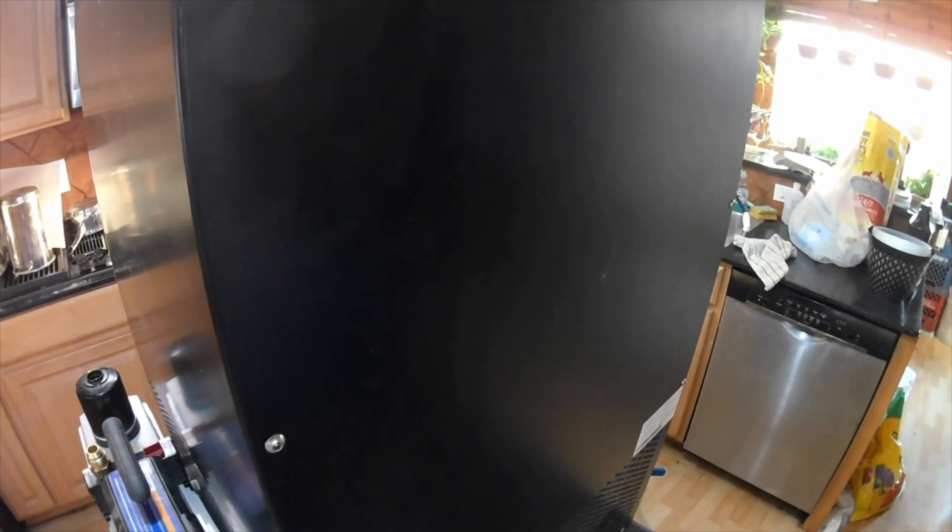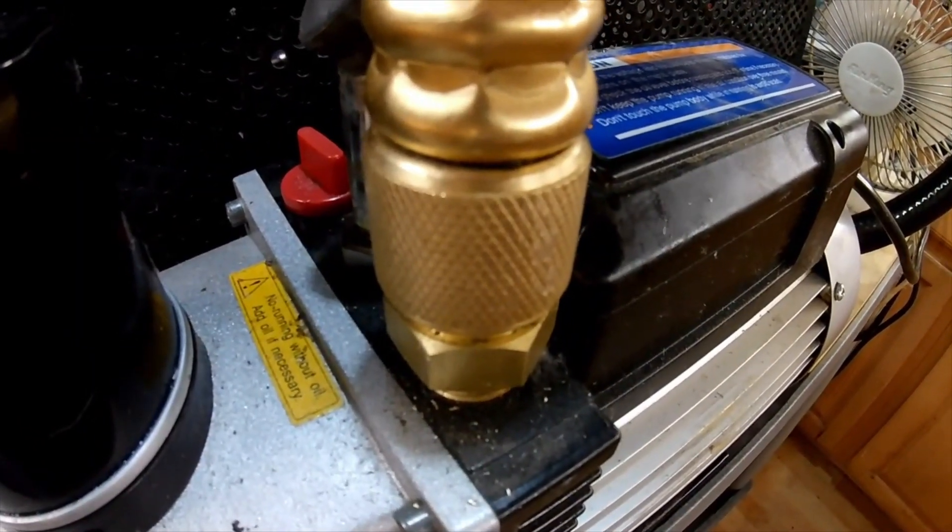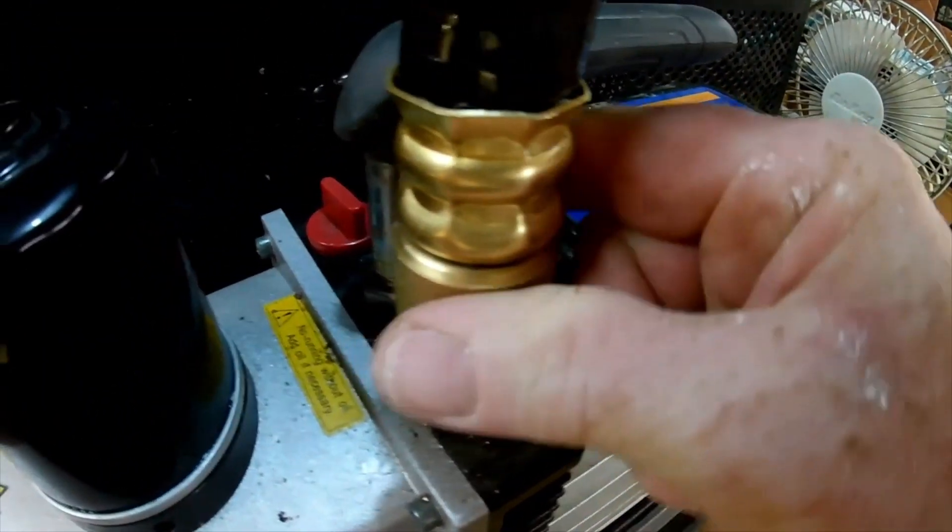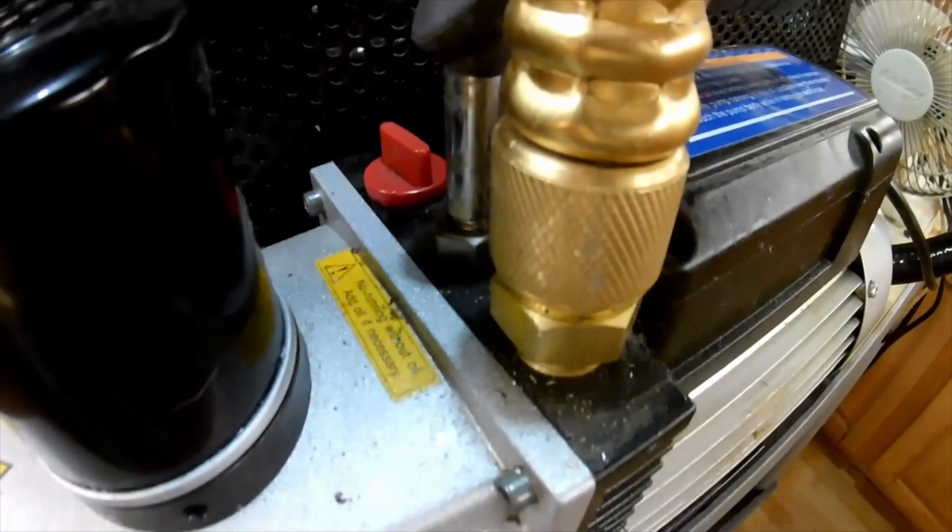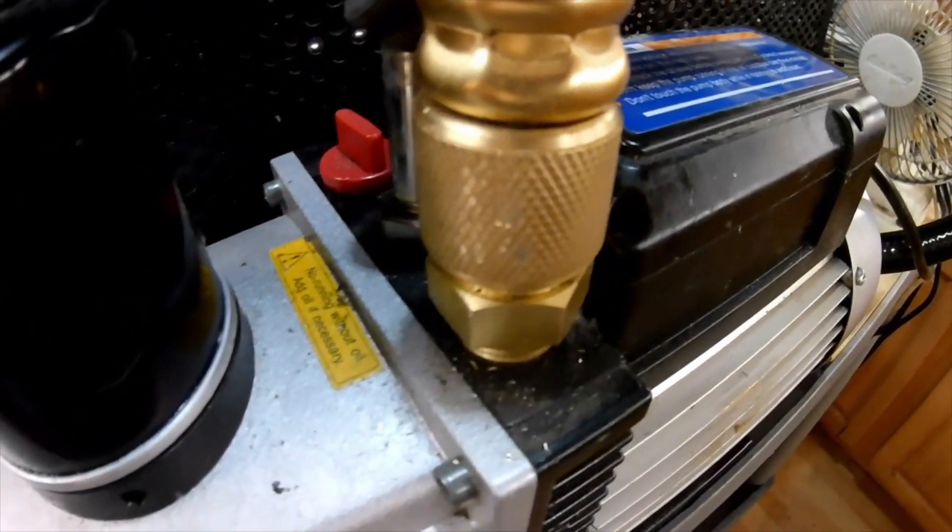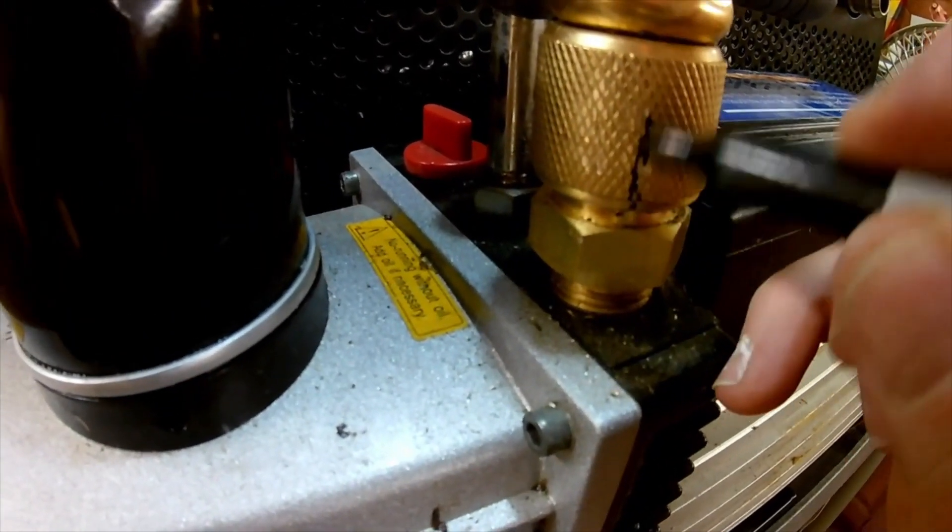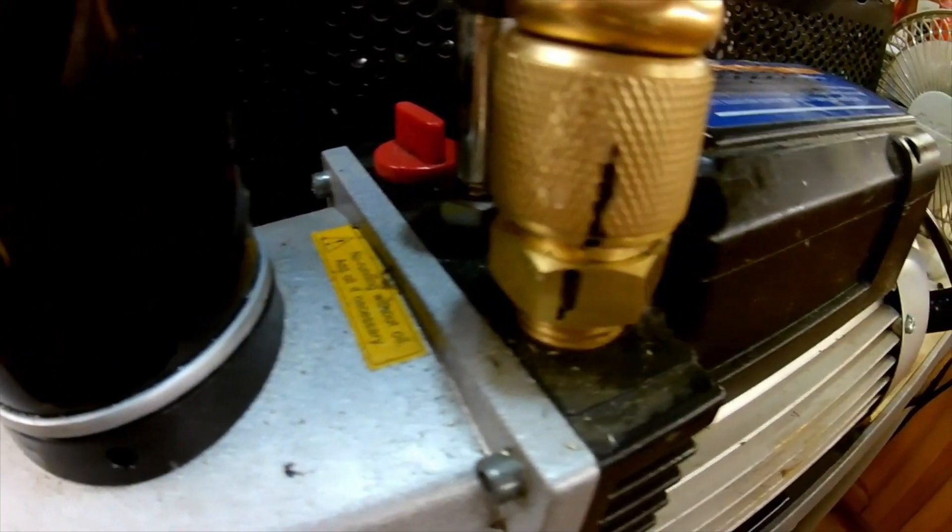Before I do that, I'm going to continue on my vacuum leak check. Just a note on tightening the JIC fitting. You want to go ahead and finger-tight the fitting until it stops. And then technically, if you really want to do it correctly, you want to come down here and you want to make a mark on the shoulder and a mark on the flat.